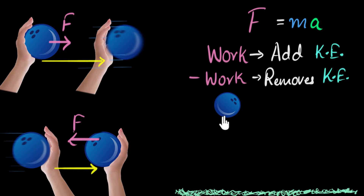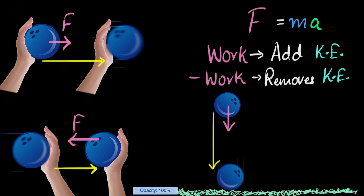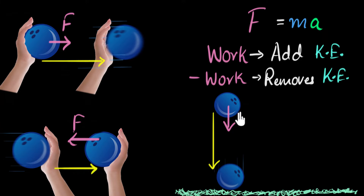Let's say you take that bowling ball and drop it from some height. As it falls down, it's going to speed up. In this case, gravity is pushing down on the ball and the ball is moving in that same direction, so gravity is doing positive work. Because gravity is doing positive work, it's adding kinetic energy to that ball — and that's why the ball is speeding up.